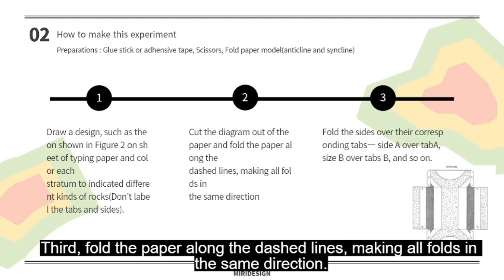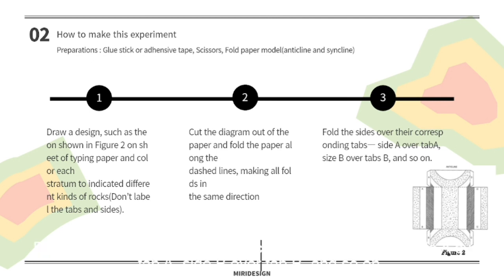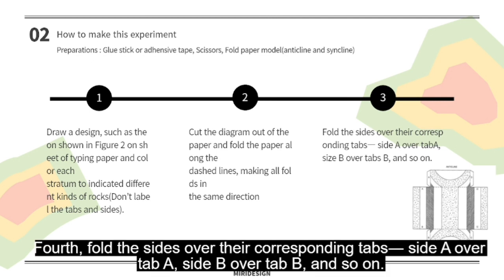Third, fold the paper along the dashed lines, making all folds in the same direction. Fourth, fold the sides over their corresponding tabs. Side A over tab A, side B over tab B, and so on.